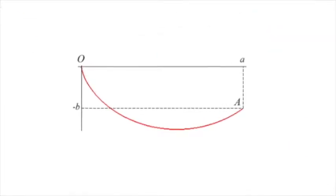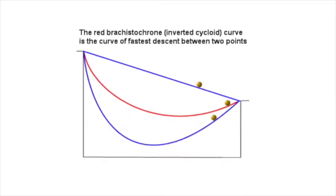The Brachistochrone is a curve that makes an object accelerate from point A to point B in the least time.